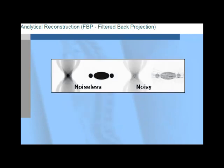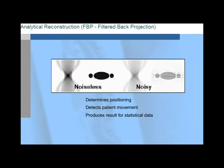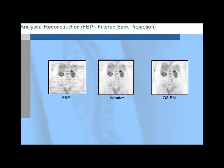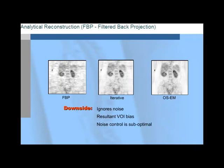FBP is employed for general PET, so it is used for reference images. FBP is effective — it can help you determine positioning and detect patient movement. It produces the correct result for high statistical data and will also generate an image to tell you where you are. Of course, FBP has its downsides and limitations. Primarily, FBP ignores noise, which gives all projections equal weight. So when highly attenuated lines of response are noisy and produce streak artifacts, the result is a bias in volume of interest, or VOIs, or correlated noise. Furthermore, FBP noise is controlled through linear filtering in sinogram space, which is suboptimal.